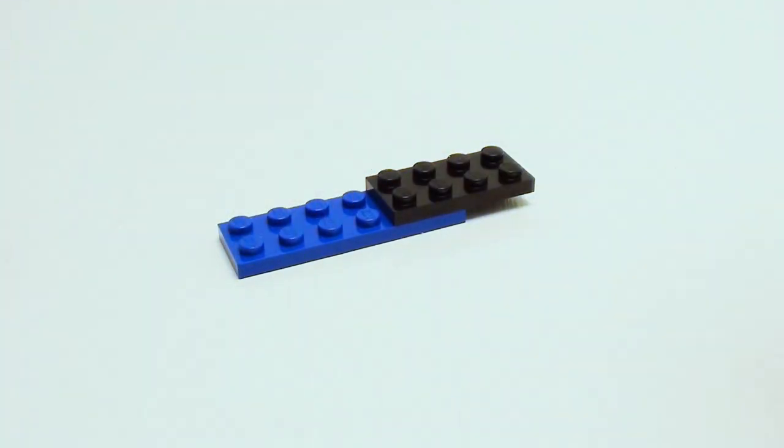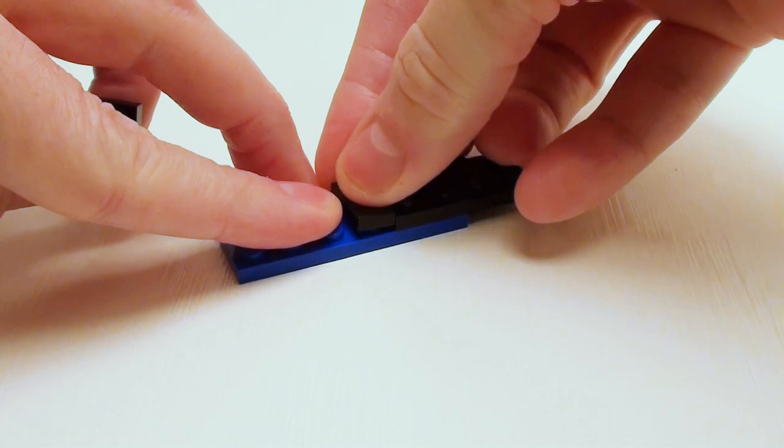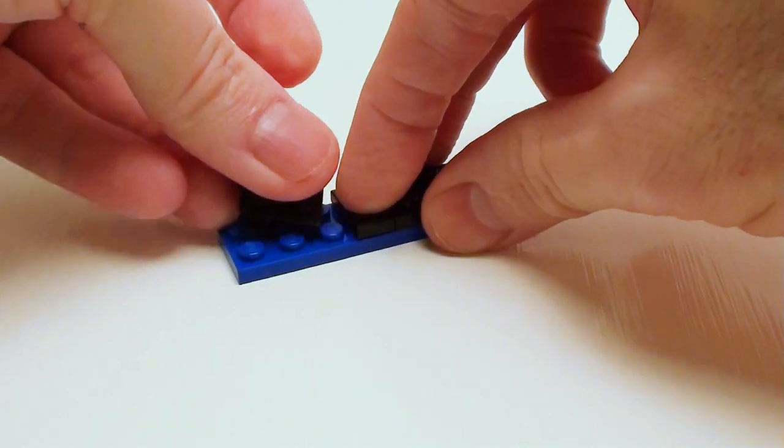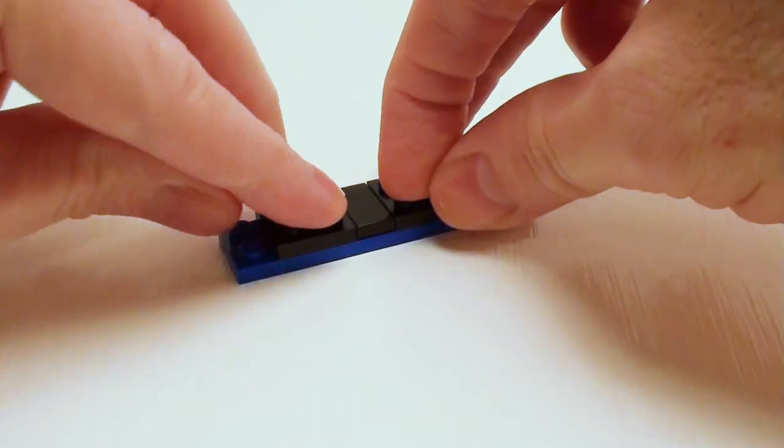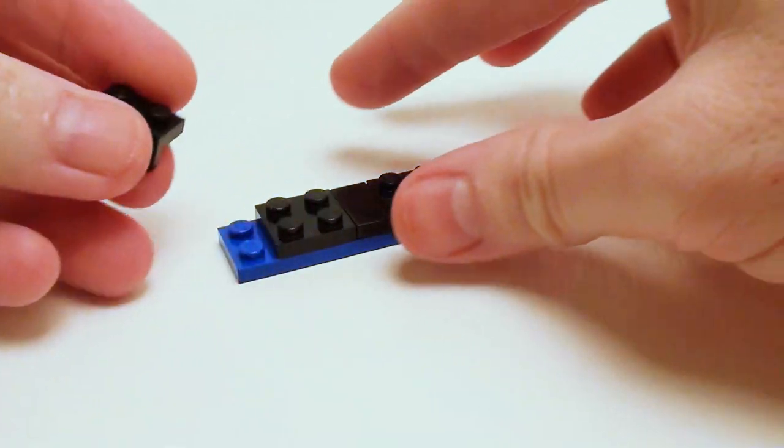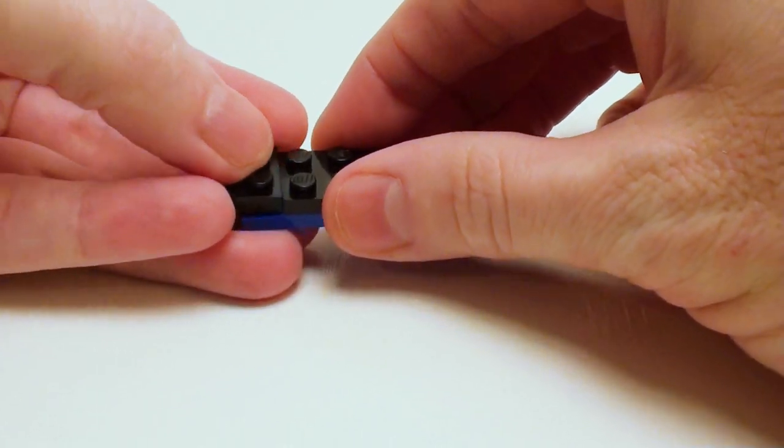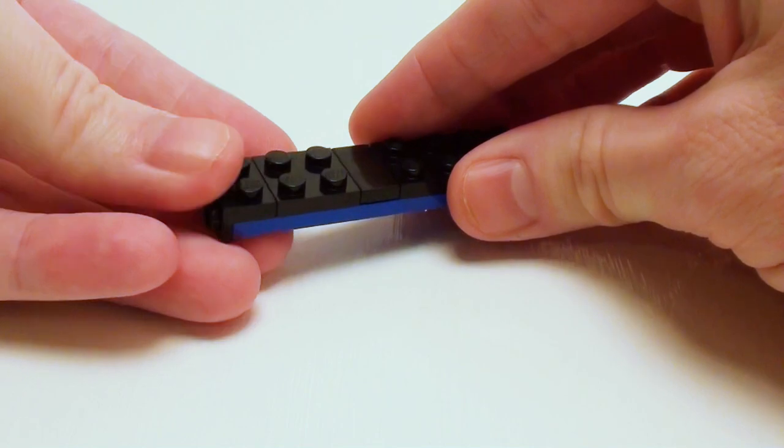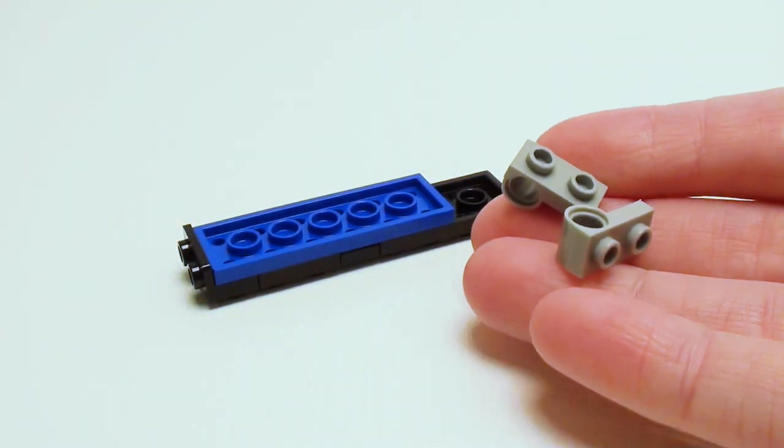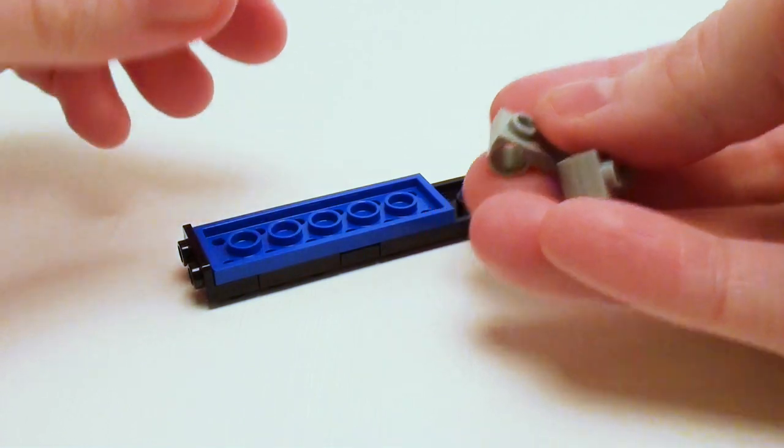Cover four studs, followed by a 1 by 2 flat tile, a 2 by 2 plate, and a 1 by 2 by 1 by 2 downward angular plate in the back. Flip this over and take a pair of 1 by 2 modified plates.